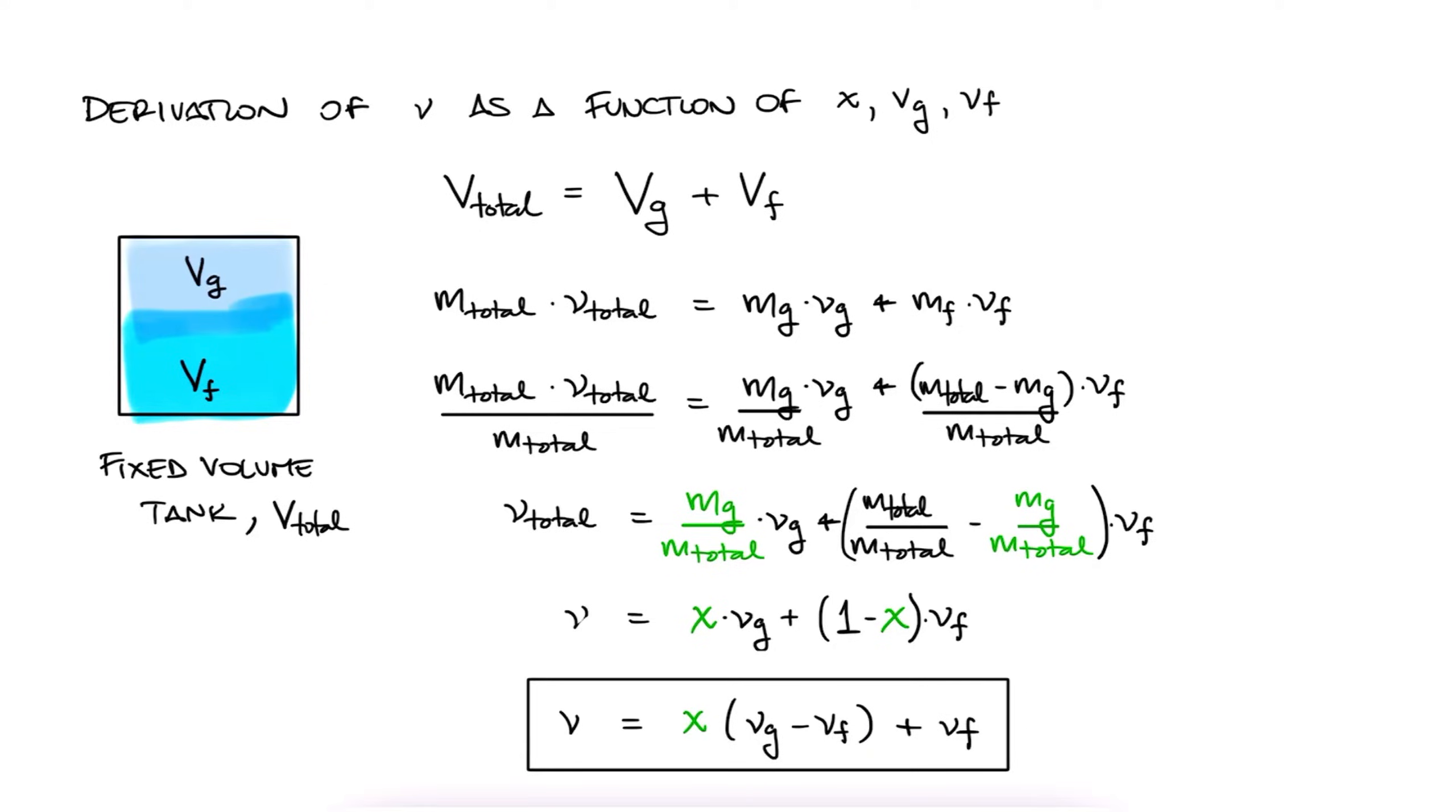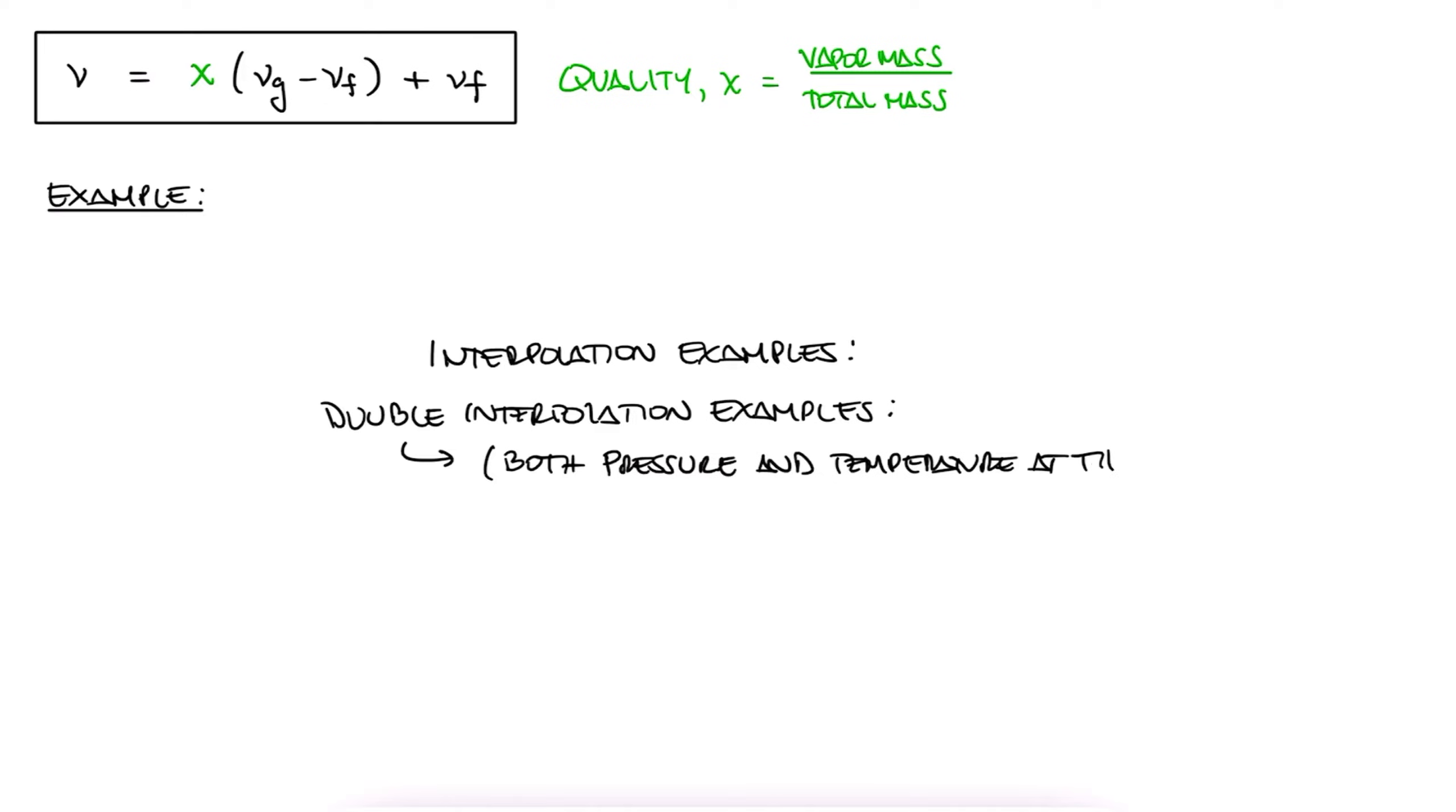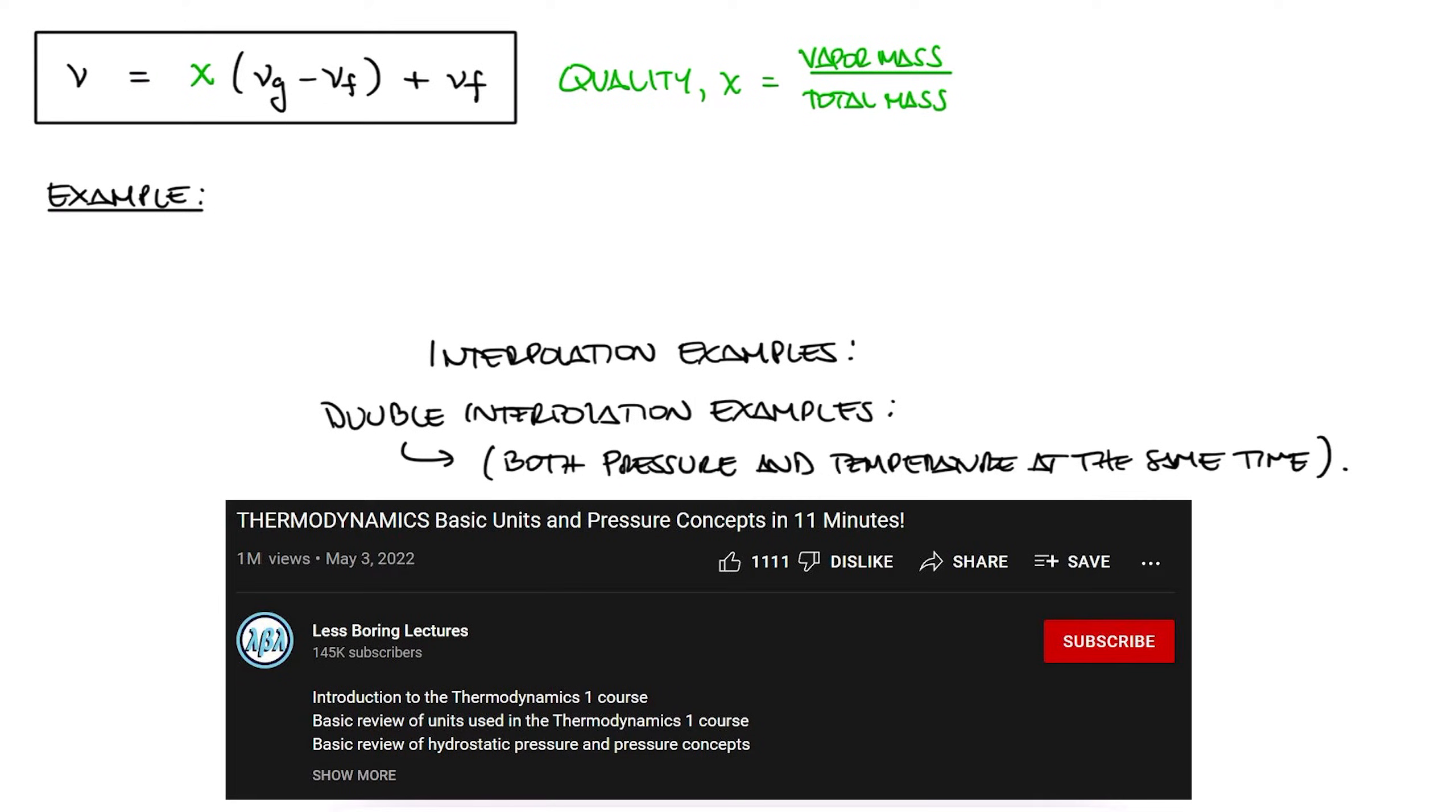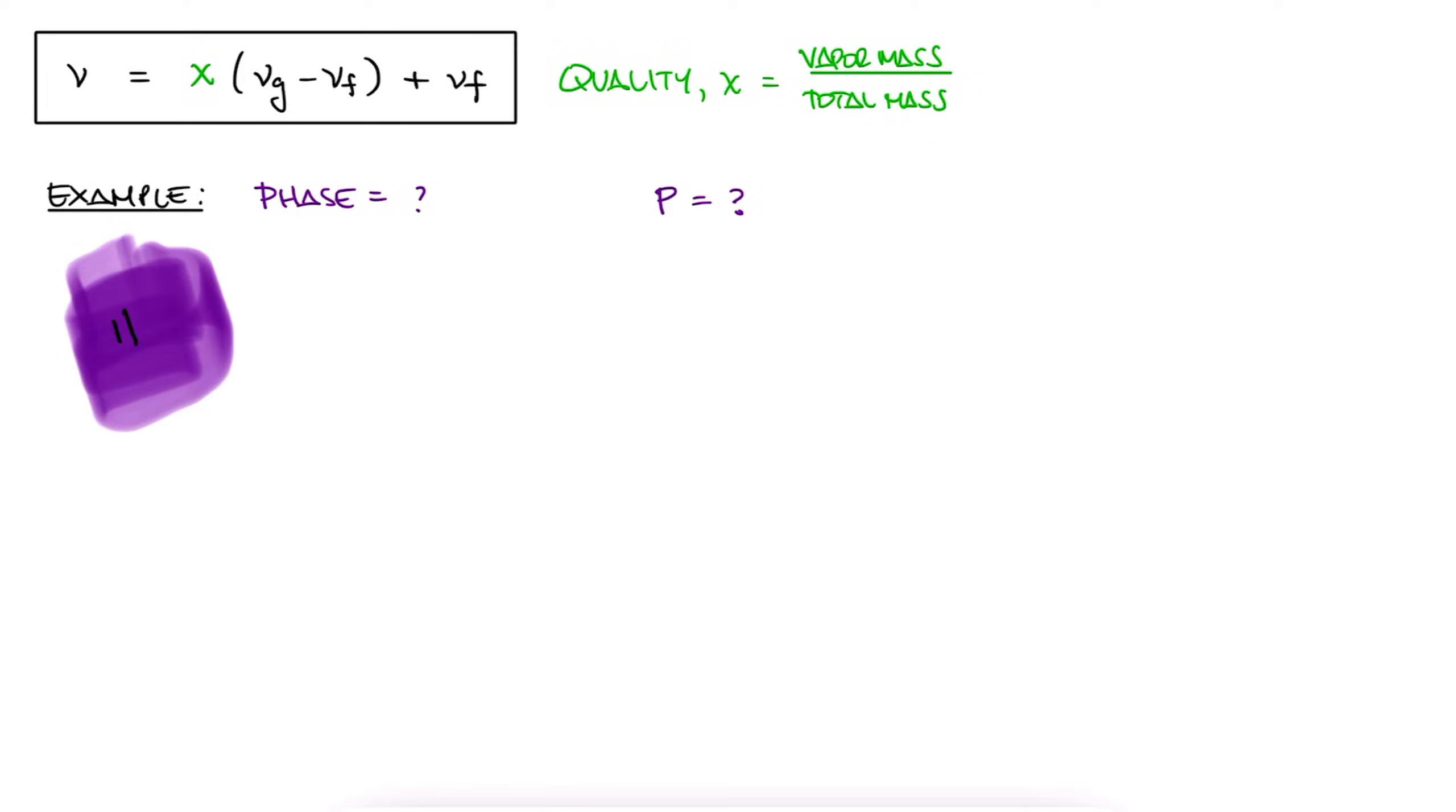Let's see how what we learned about quality is applied with a simple example, and if you want to check some examples where we use what we learned about both interpolation and even double interpolation pressure and temperature at the same time, make sure to check out the links in the description of this video. What is the phase and pressure of water with a specific volume of 30 cubic meters per kilogram and a temperature of 30 degrees Celsius? What is the quality x if applicable?